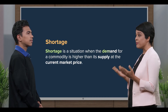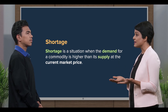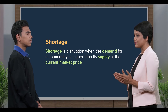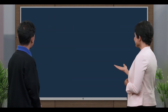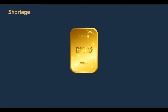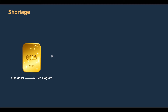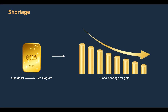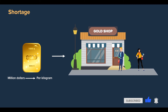In economics, a shortage is a situation when the demand for a commodity is higher than its quantity supplied at the current market price. Take gold for example: if gold was sold at one dollar per kilogram, then there would be a global shortage for gold since it's so cheap. However, if gold was priced at a million dollars per kilo, then there would not be a gold shortage since very few people could afford to buy it.